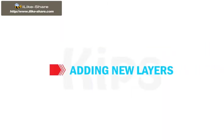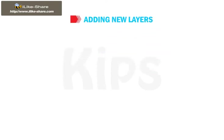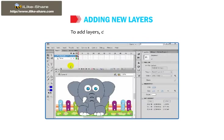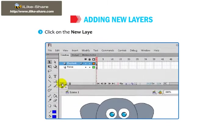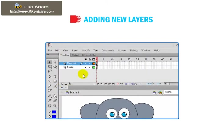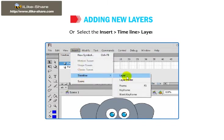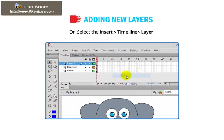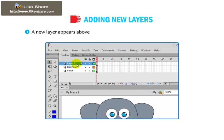Let me explain the steps to add new layers. To add layers, do one of the following: click on the New Layer button at the bottom of the timeline, or select Insert, then Timeline, then Layer. A new layer appears above the selected layer and it becomes the active layer.